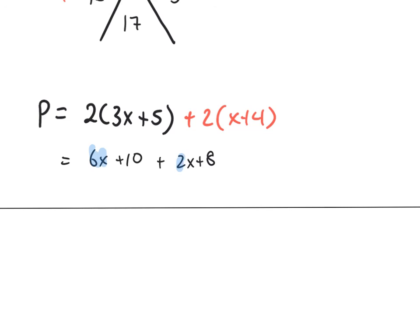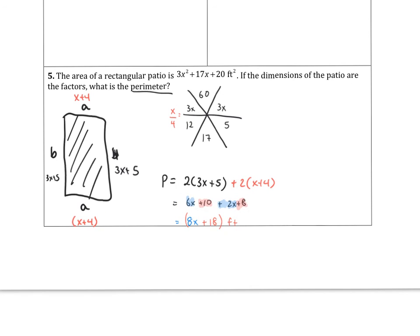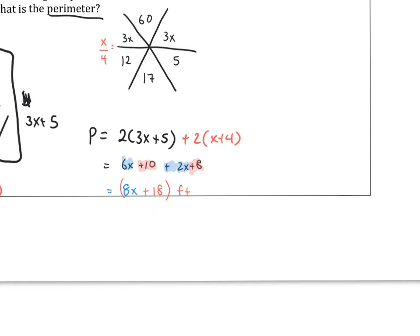These two are like terms right there. Don't forget that plus there. So we get 8x, and then these are like terms, the positive 10 and the positive 8, 18. And so the answer is 8x plus 18 feet. And there we go.